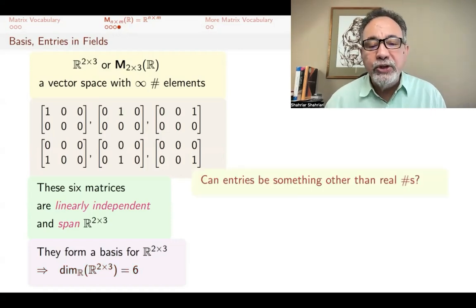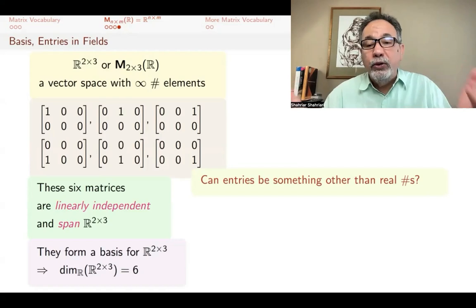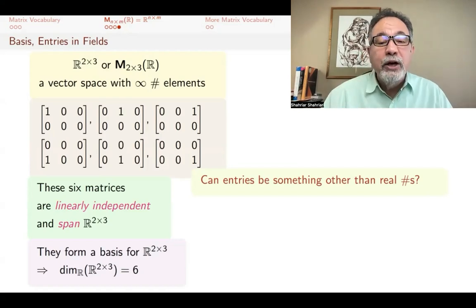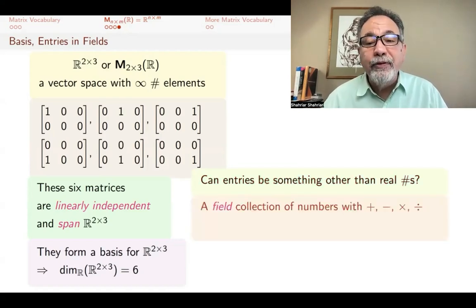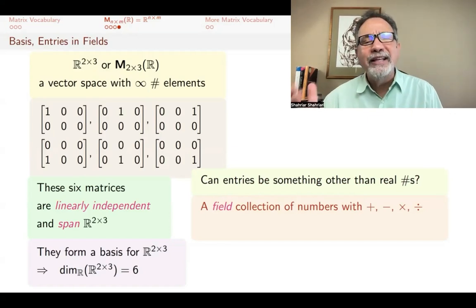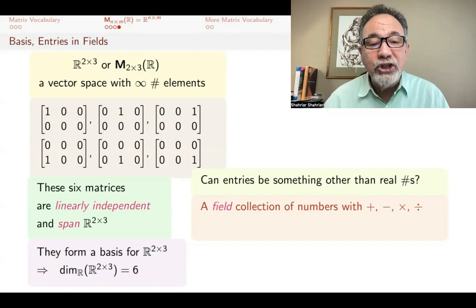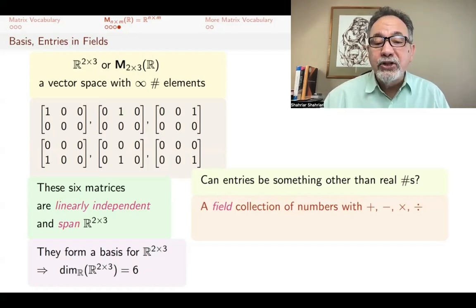I want to say one other thing, which is that these entries are real numbers. And for first time through linear algebra, the entries should always be just real numbers. But can entries be something else other than real numbers? And the answer is yes. The entries can be anything you like. But to get a vector space, what you want is that the entries come from a field. What's a field? A field is a collection of numbers where you can add, subtract, multiply, and divide by non-zero numbers. In fact, it doesn't even have to be numbers. Any collection of elements where you have a proper addition, subtraction, multiplication, and division by non-zero elements is called a field.